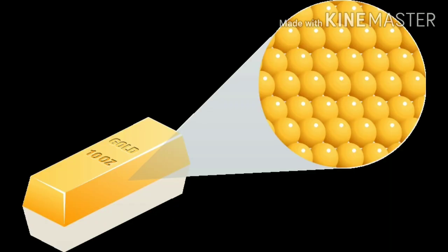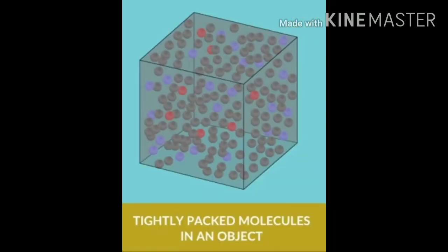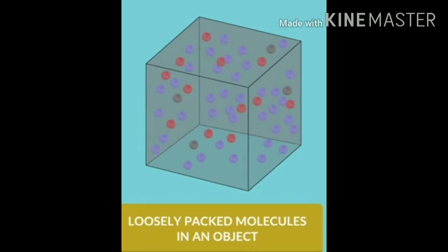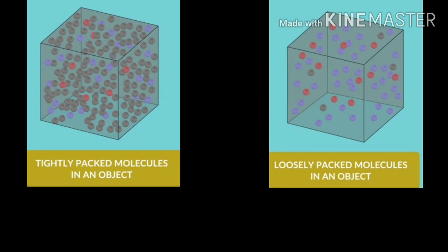Everything around us is made up of small molecules. In some objects, molecules are tightly packed or very close to each other, while in some other objects, molecules are loosely packed together. This is actually what density means.